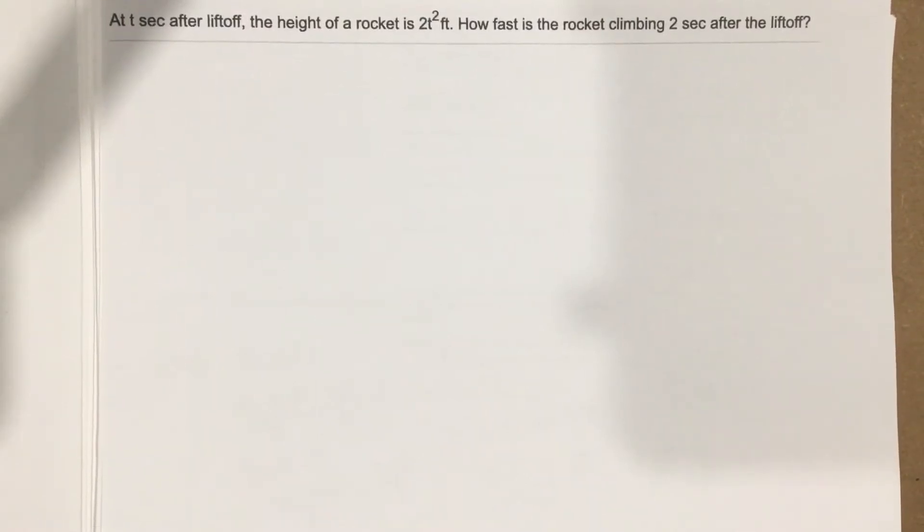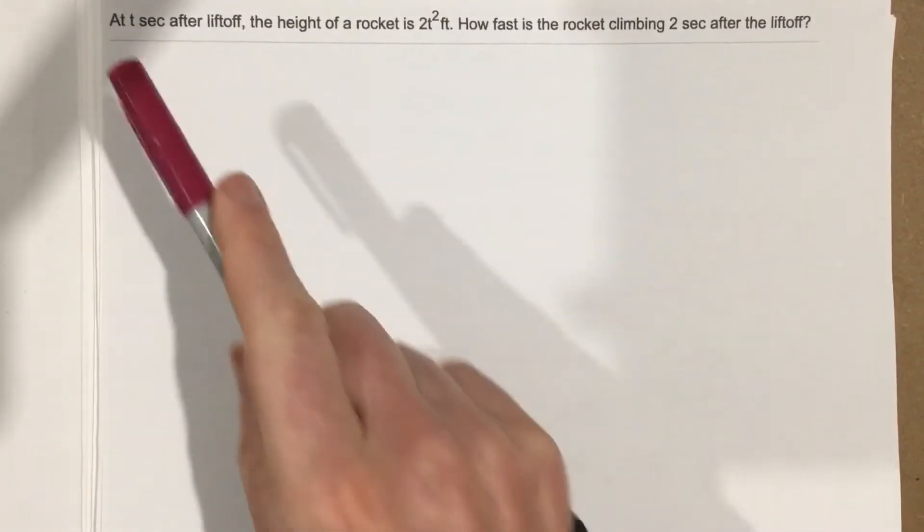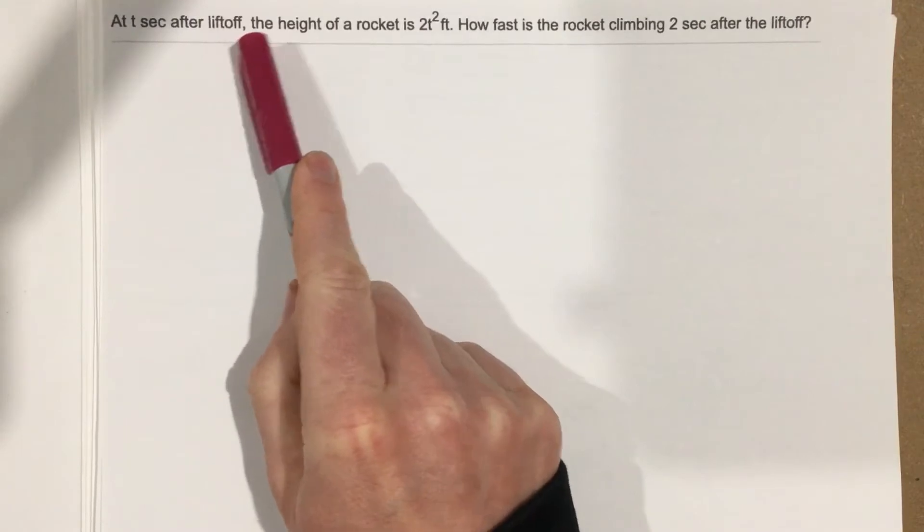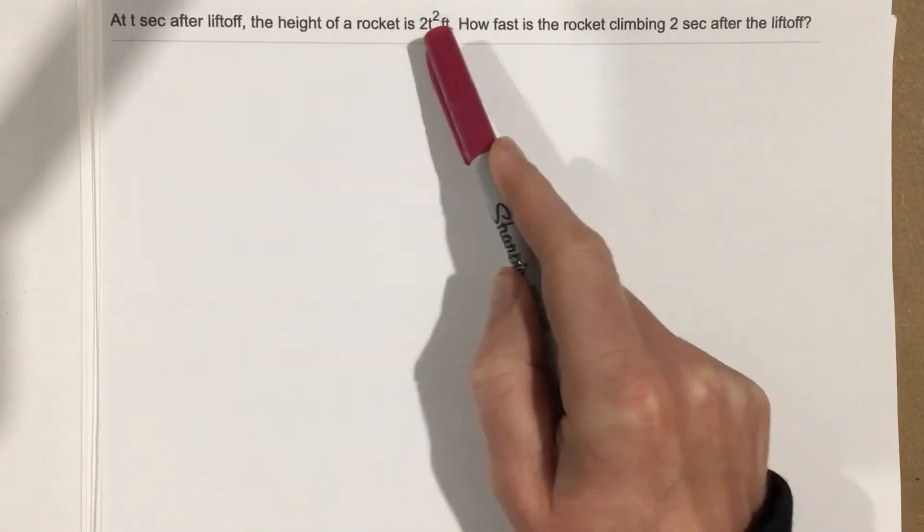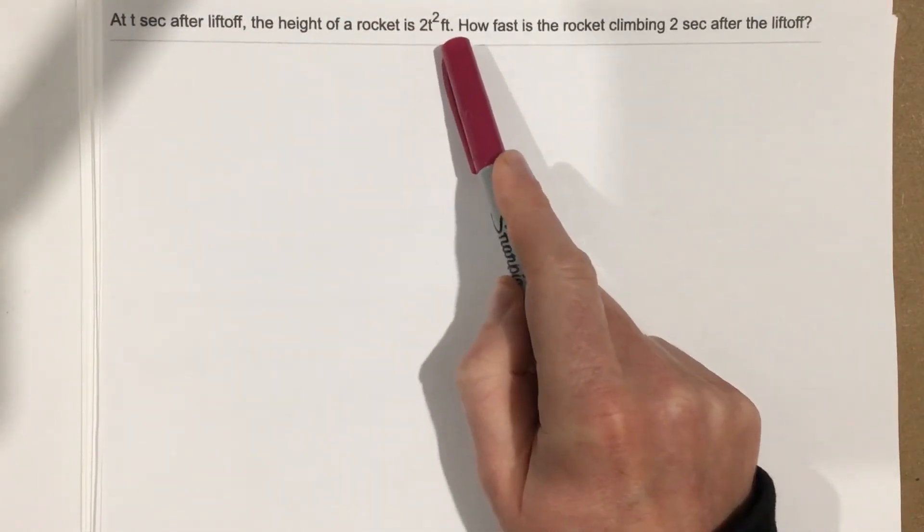This is problem number 9 for section 3.1. In this problem, it says that t seconds after liftoff, the height of a rocket is 2t squared feet.